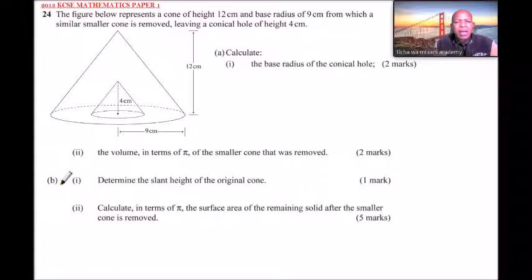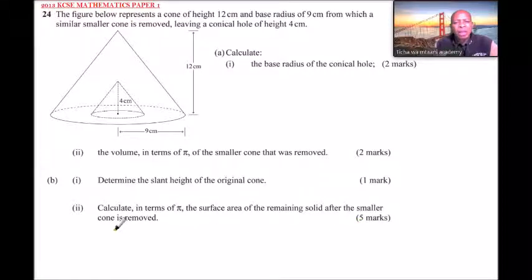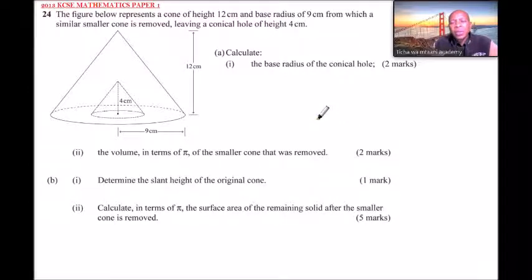Part b, roman numeral one: determine the slant height of the original cone — one mark. Roman numeral two: calculate in terms of pi the surface area of the remaining solid after the smaller cone was removed — five marks. This question is from similarity and enlargement.